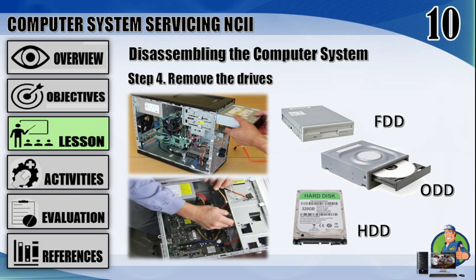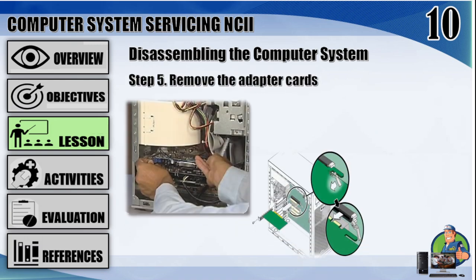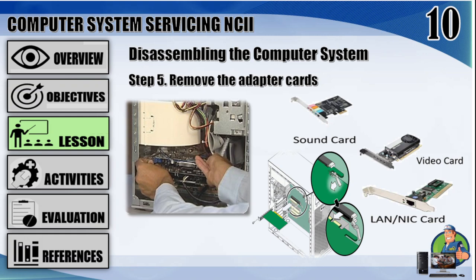Once that is completed, pull on the tab securing the drive in place, then push it out from the inside. Step 5: remove the adapter cards — there are many types of expansion cards that can be installed in a computer, including sound, video, modem, network, and interface cards. If any wires are connected to the back of the expansion card, disconnect them from the card. Remove the screw holding the PCI card in place. Grab the top edge of the expansion card and pull up.